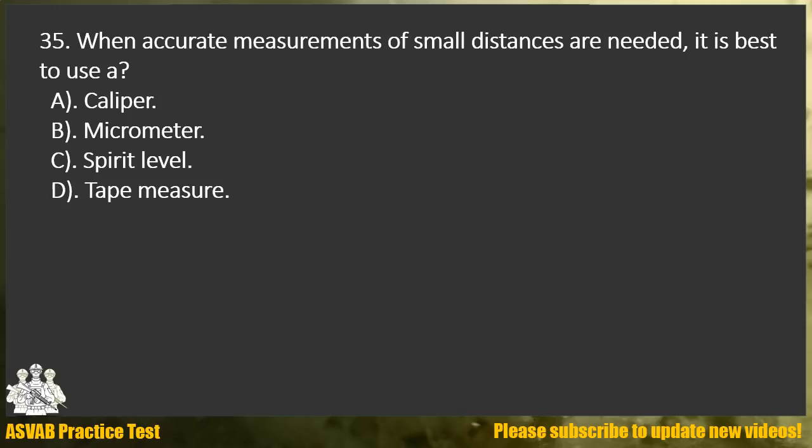Question 35. When accurate measurements of small distances are needed, it is best to use: A. Caliper. B. Micrometer. C. Spirit level. D. Tape measure.